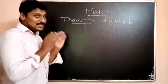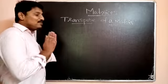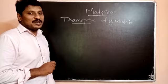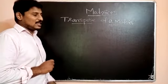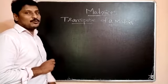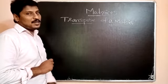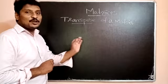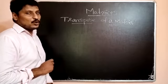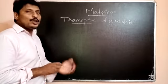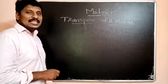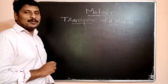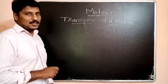Dear students, in this video we discuss transpose of a matrix. Transpose of a matrix is obtained by interchanging rows and columns. When rows and columns are interchanged, that gives us the transpose of a matrix.